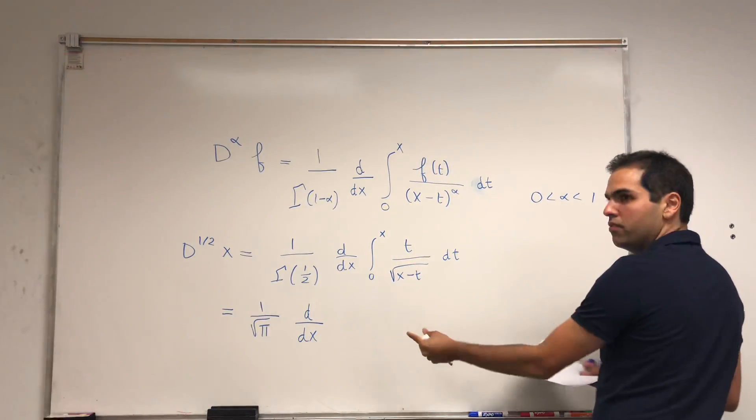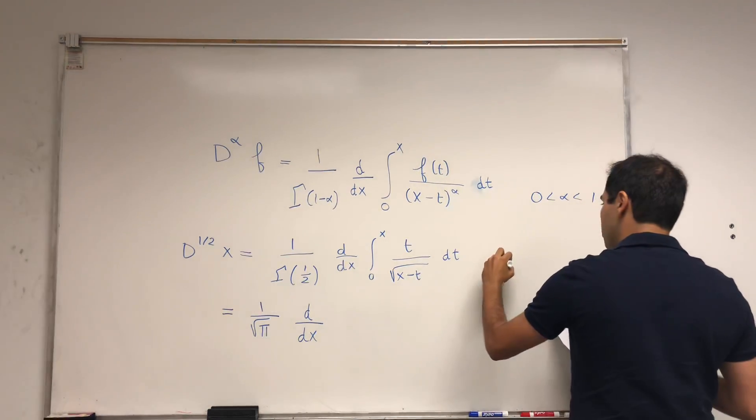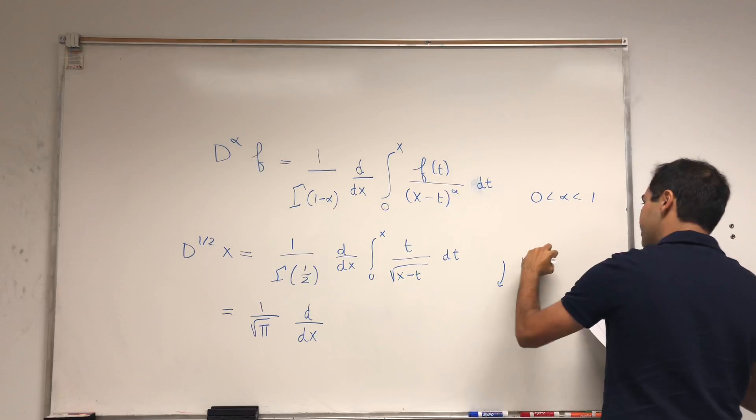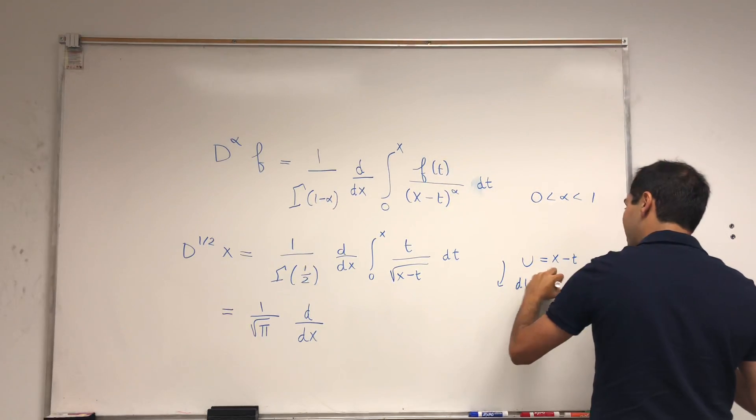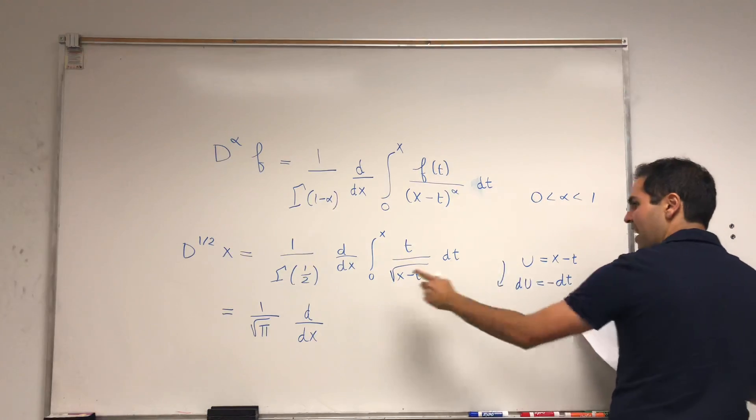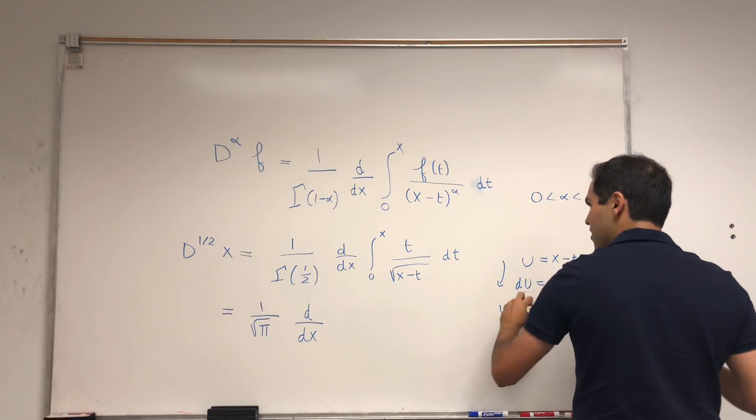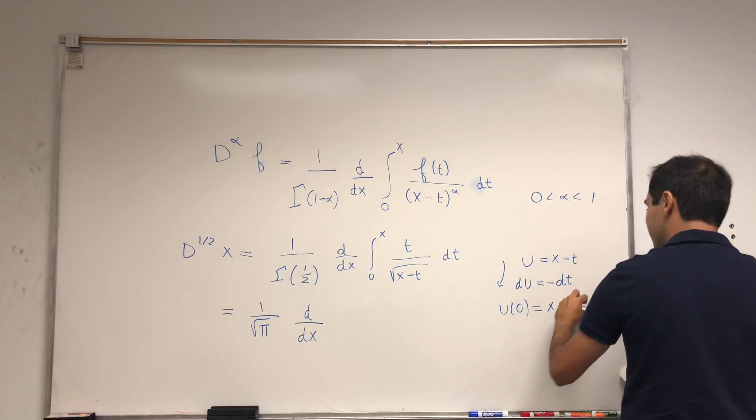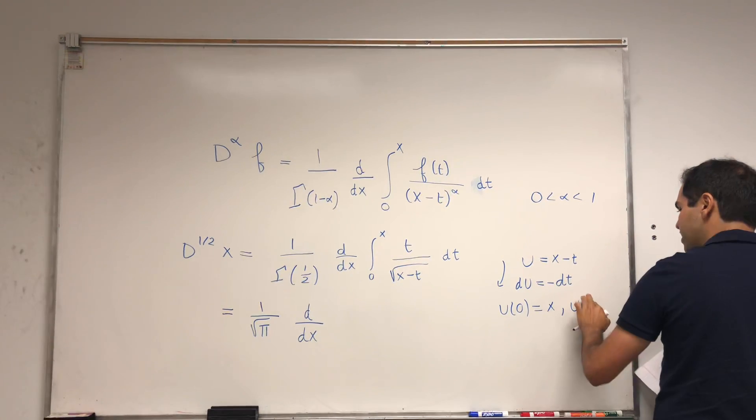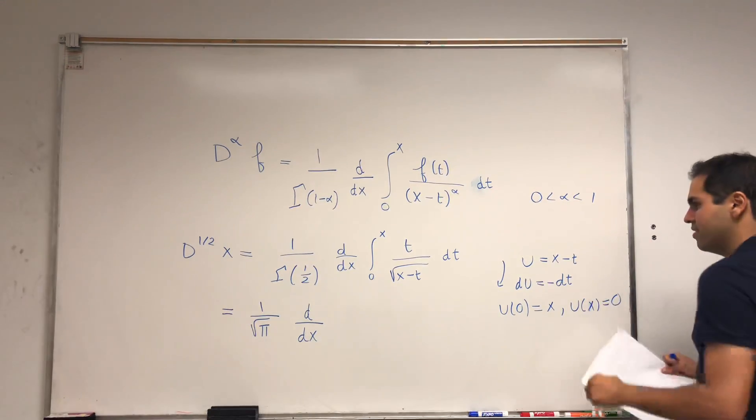And for the integral, I want to sort of get rid of the denominator, so I use this u substitution. u is x minus t, then du is minus dt, and then u at zero, if you plug in t equals zero, it equals x. If you plug in t equals x, it becomes zero.